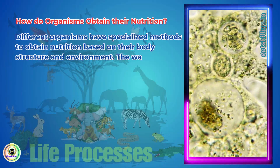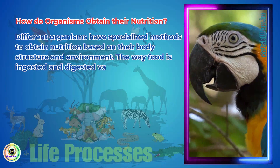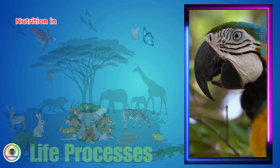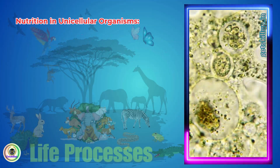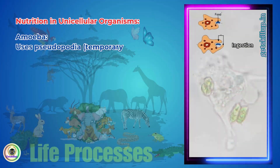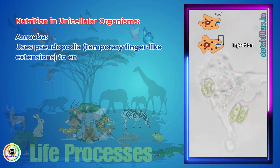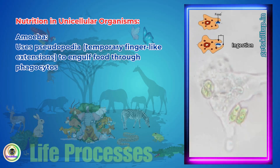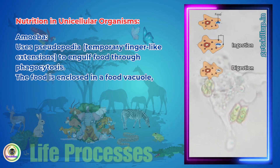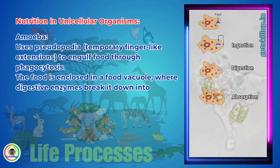Nutrition in unicellular organisms: Amoeba uses pseudopodia — temporary finger-like extensions — to engulf food through phagocytosis. The food is enclosed in a food vacuole where digestive enzymes break it down into simpler substances.